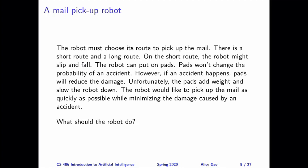The running example is about a mail pickup robot. The robot wants to pick up the mail, and there are two routes available: a short route and a long route. The short route is more dangerous than the long one, so on the short route, the robot might slip and fall and have an accident.